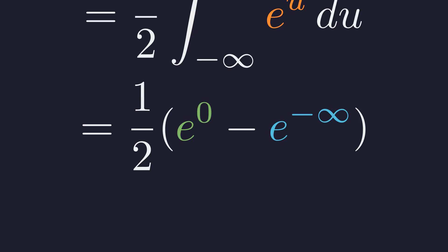That's 1 half times e to the 0 minus e to the negative infinity. e to the 0 is 1. And as u goes to negative infinity, e to the u goes to 0. So we get 1 half.